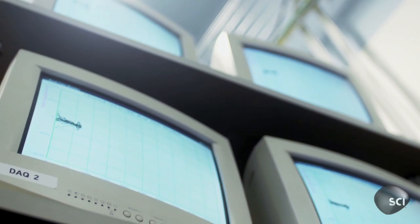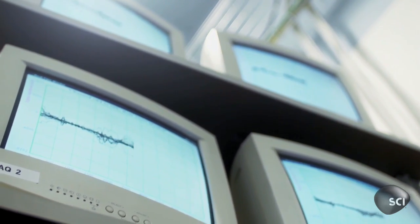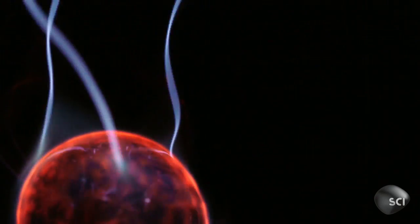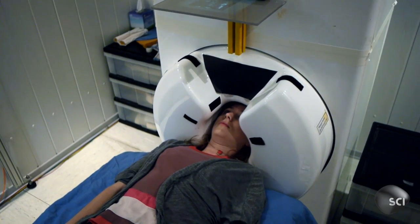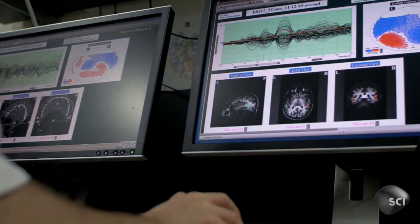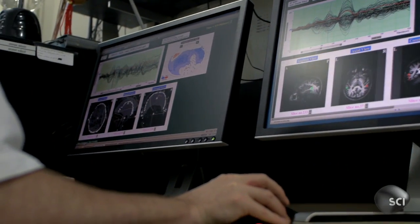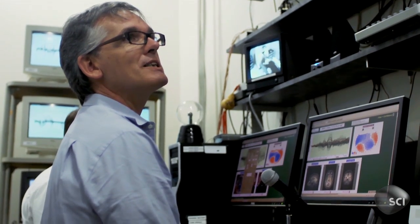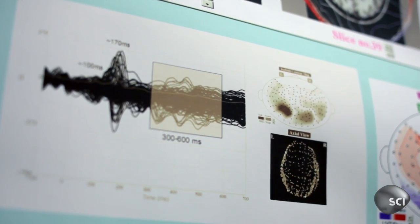The MEGs are looking for a signal given off by neurons that's incredibly tiny, a field that's a thousand times smaller than a refrigerator magnet. Every millisecond, that is, every thousandth of a second, we're recording from the entire head, from all 160 channels. It's an enormous amount of information that we then have to sift through to make sense of.